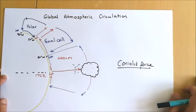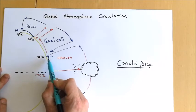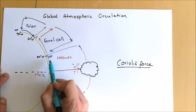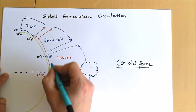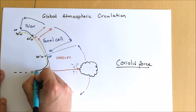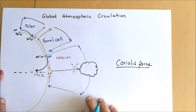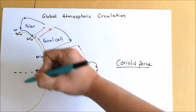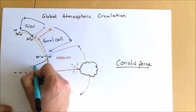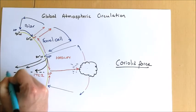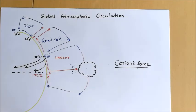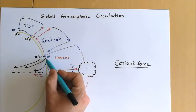Due to the deflection of wind movement caused by the Earth's rotation, air travelling across the surface of the Earth is directed to the right in the northern hemisphere. So the air in the Hadley cell — the bottom limb moving along the surface back towards the equator — is actually deflected off to the right, which creates what we know as the north-east trade winds. The air is moving from the east to the west.